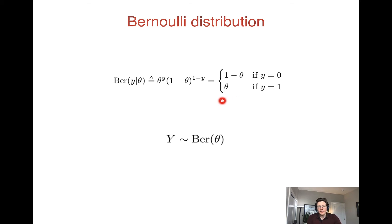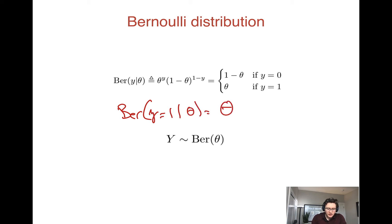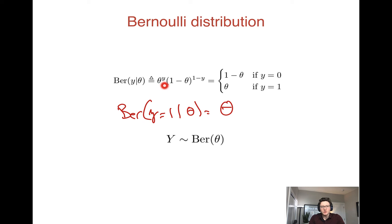One way to write this is using piecewise notation, where we have probability of y with two options: y equals one and y equals zero. An equivalent way is to write Bernoulli of y equals one given theta equals theta. And another trick we can use is to take y as an input using exponent notation. Where y is one, we look at that case: y equals one gives us theta here.